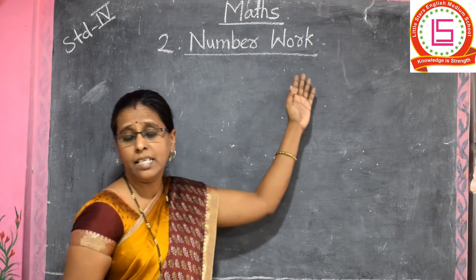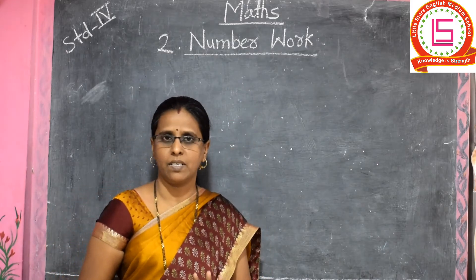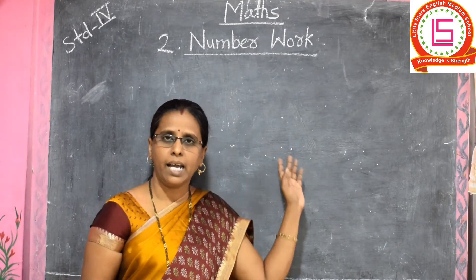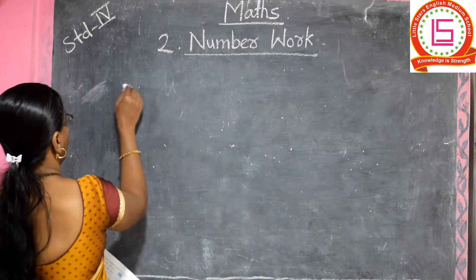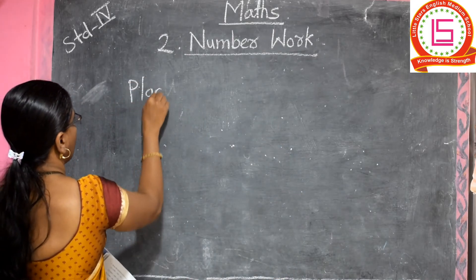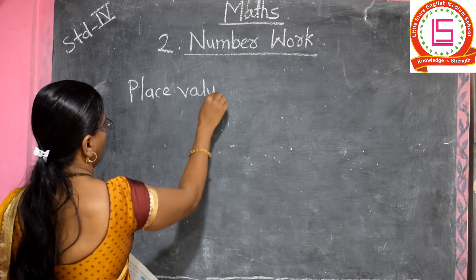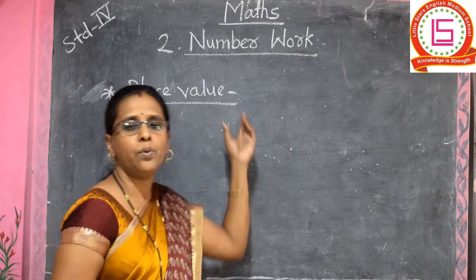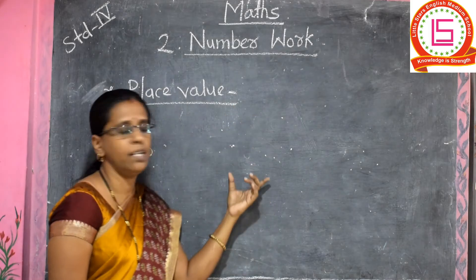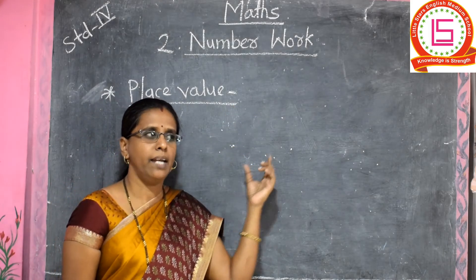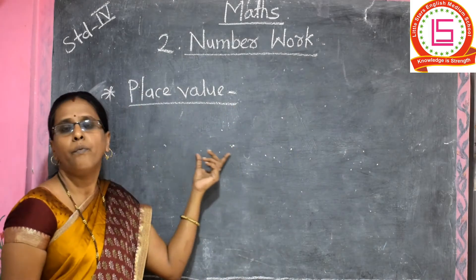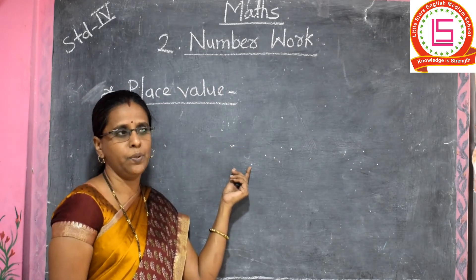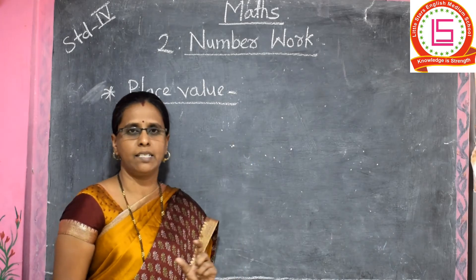In this lecture, first we discuss about 4-digit numbers, then 5-digit numbers. After that, the next point will be place value. In place value, a number is given and one or two underlined digits are given. You write the place value of those digits.